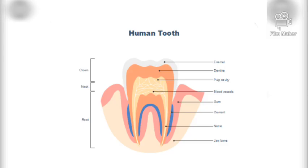A tooth has three parts. First is the crown, second is the neck, and third is the root. The crown is the uppermost part, the neck is the middle part, and the root is beneath the neck. The crown has a visible enamel layer on top.